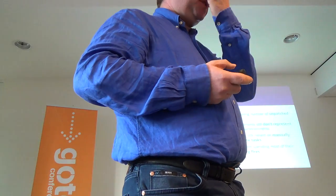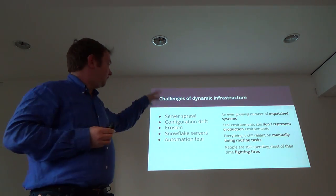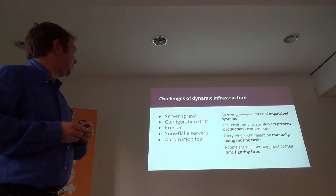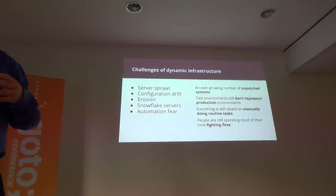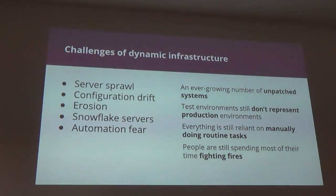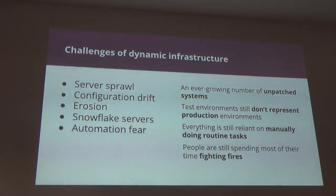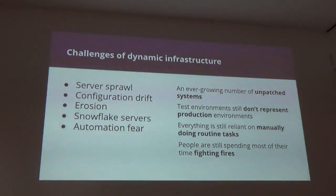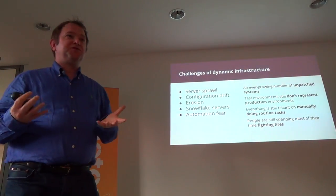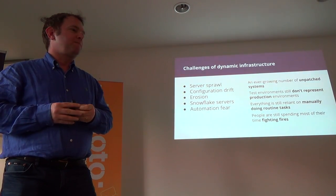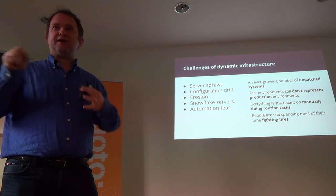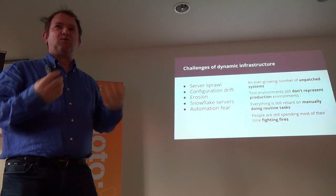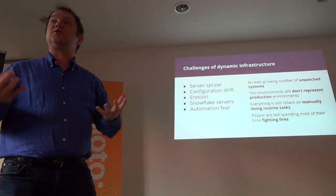There are several key challenges. Server sprawl means having hundreds of servers that are difficult to keep in shape. Configuration drift happens when even if you start from the same template or AMI image, people make changes over time and servers become more and more different. Even with automation tools like Puppet, Chef, and Ansible, once servers diverge, running those tools becomes finicky — some work, some don't, some break — and it still takes manual effort.